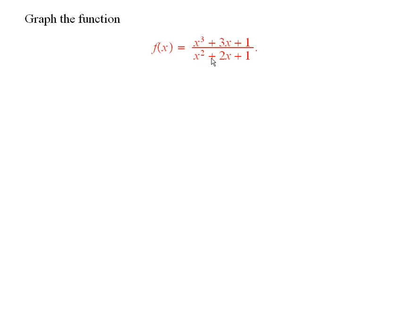We want to graph this rational function. First of all, if you let x equal negative 1, the denominator is clearly equal to 0. And if you let x equal negative 1, the numerator is not 0.